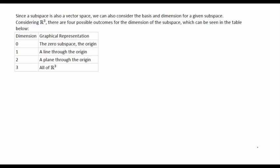We can have a possible dimension zero. So this is the zero subspace. It would correspond to just the origin of a single point. A dimension of one would correspond to a line through the origin. Dimension two would correspond to a plane through the origin. And dimension three would represent all of R^3.